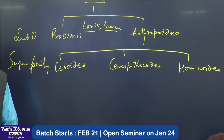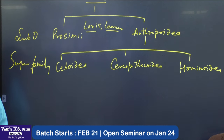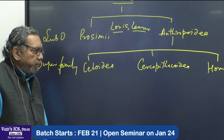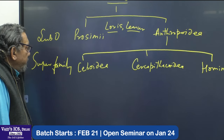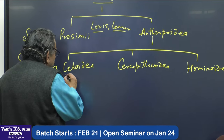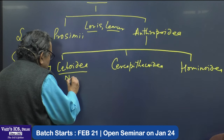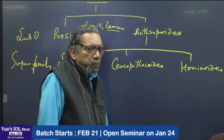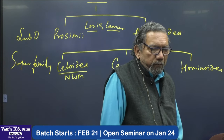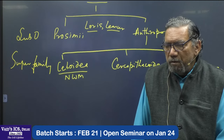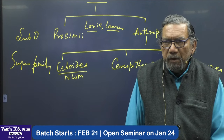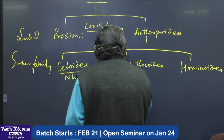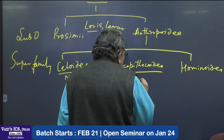There are three superfamilies: Shiboidia, Sarcopythicoidea, and Hominoidea. Shiboidia are New World Monkeys — monkeys of the New World. Where is the New World? The Americas, both Americas. Sarcopythicoidea are Old World Monkeys.